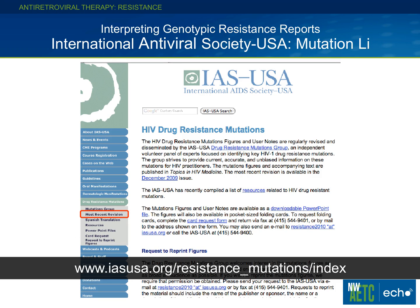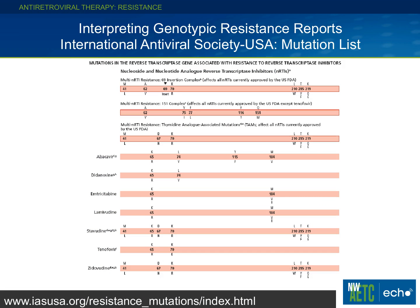A particularly good resource is the International Antiviral Society USA — they have an excellent chart. Go to their home page and look on the far left-hand side where you see drug-resistant mutations, then go to the most recent revision. You'll get a document with a graphic that outlines a map of common mutations. It's very easy to understand: all drugs are listed with their amino acids and mutation changes, giving you a visual for where mutations occur for different drugs.